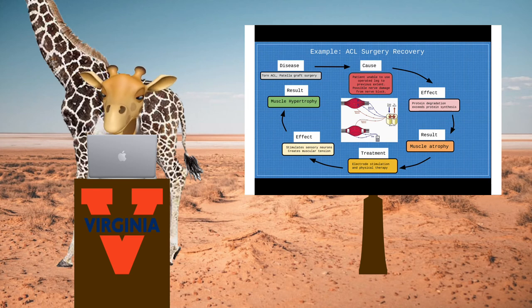This is treated with physical therapy and electrode stimulation. While the patient exercises in physical therapy, they have electrodes attached to their quadriceps sending signals to the muscle.